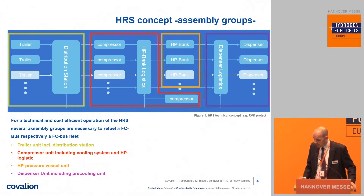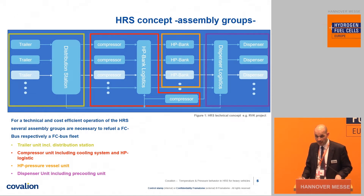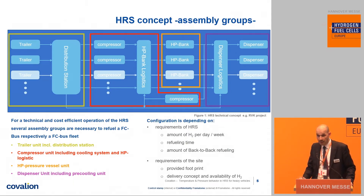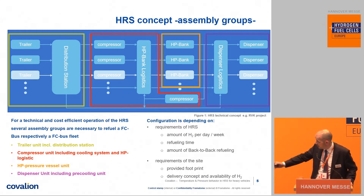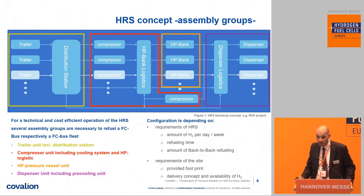The whole hydrogen refueling station consists of different assembly groups, and it's quite important that they all fit together to get a technically and cost-efficient way to operate the station. The configuration depends on the requirements: the amount of hydrogen per day or week, the refueling time, and the amount of back-to-back refuelings. Furthermore, there are site requirements like the provided footprint, the delivery concept, and the availability of hydrogen.